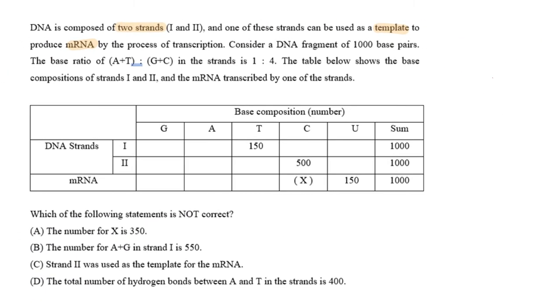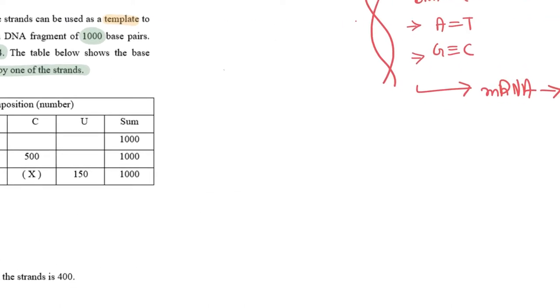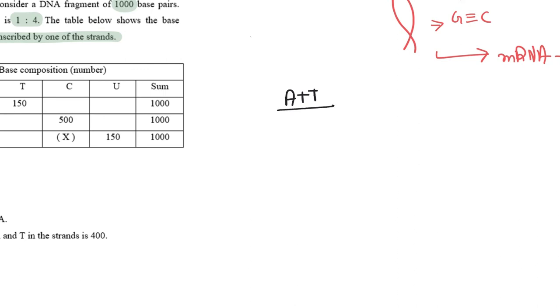Now look at the question. There are two strands, 1 and 2. One was the template and there's a DNA fragment, each fragment is 1000 base pairs. They've given you the ratio AT/GC, that's 1 to 4, and they've told you that one of the strands is working as a template.